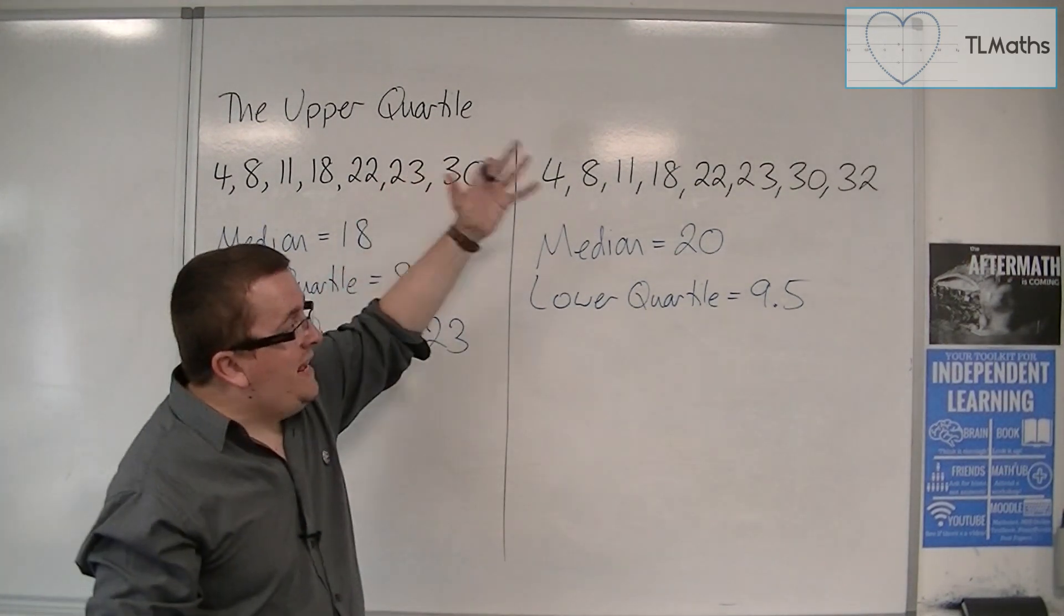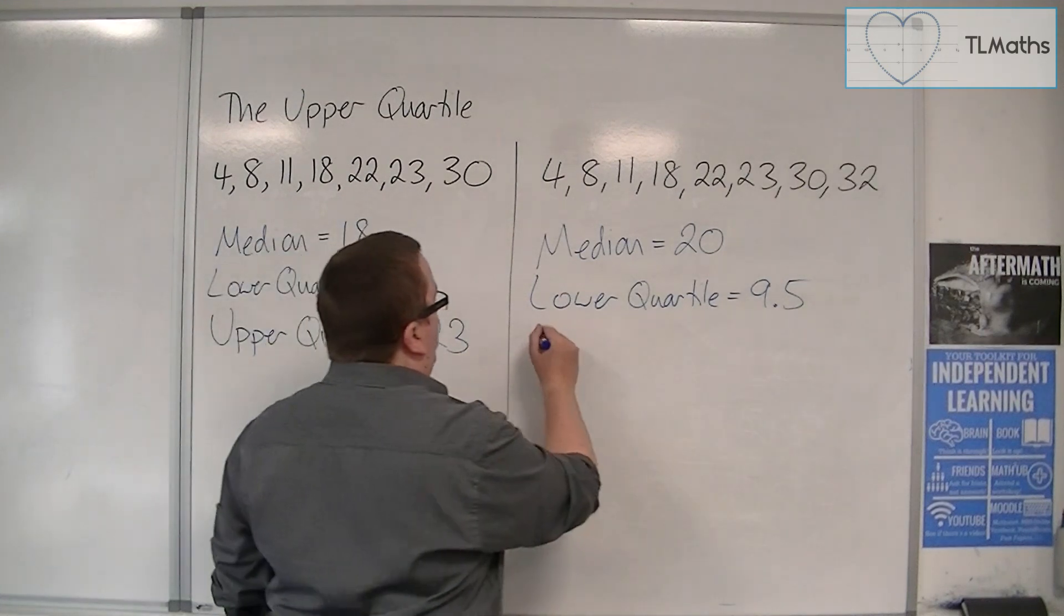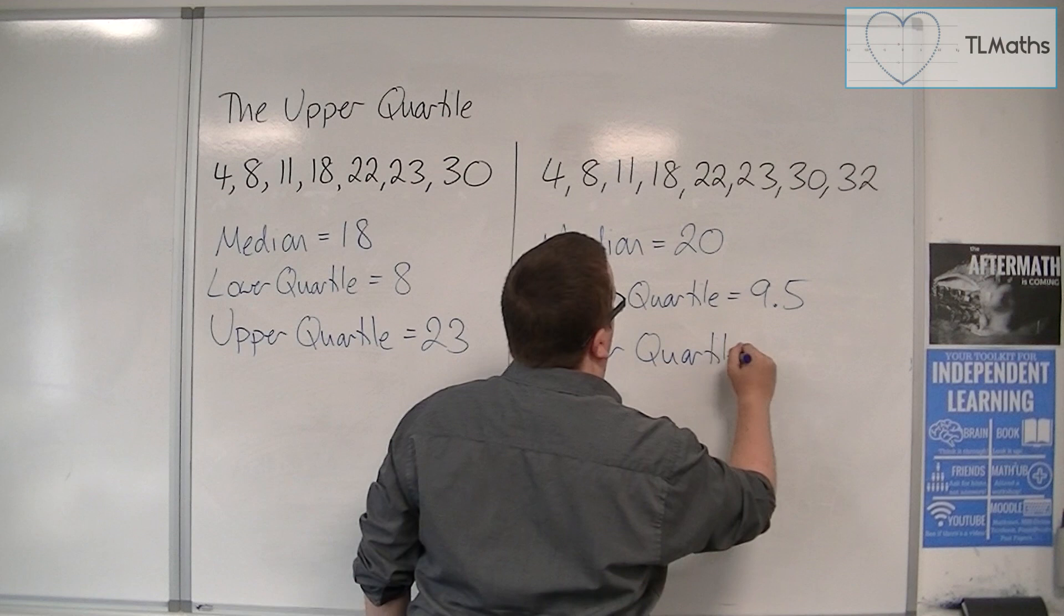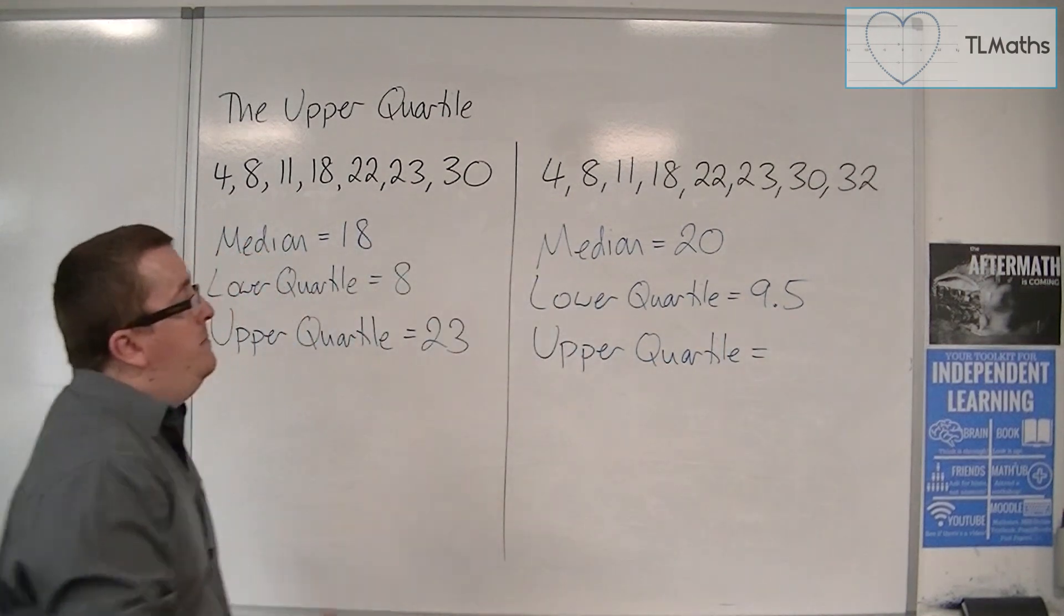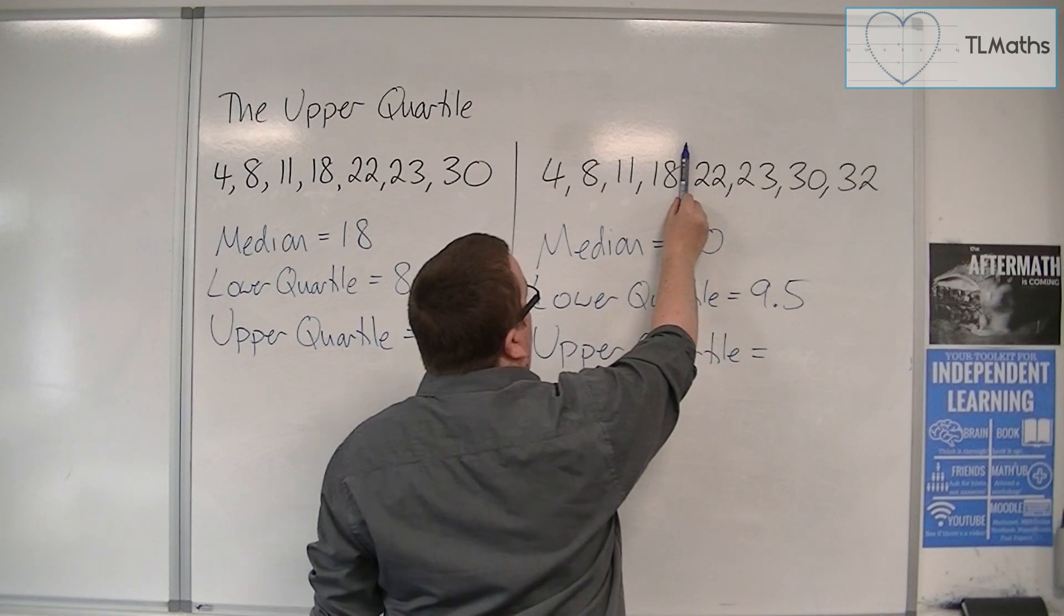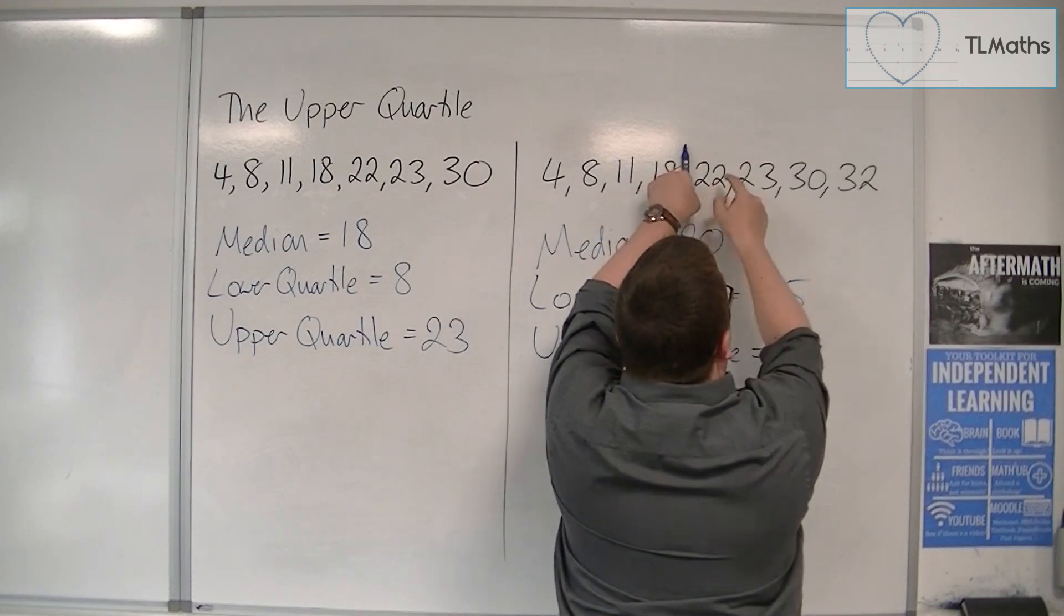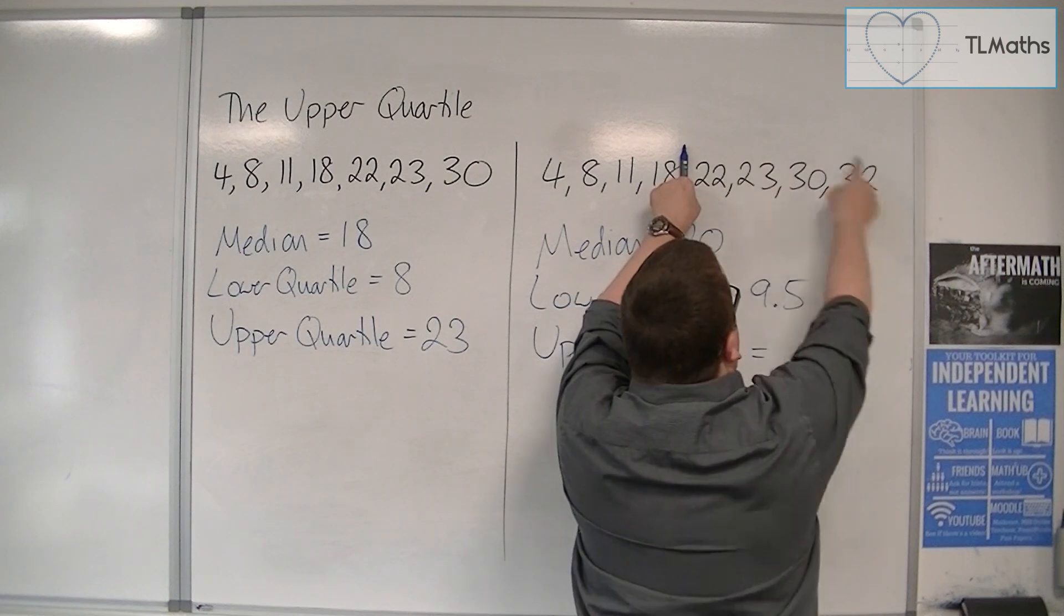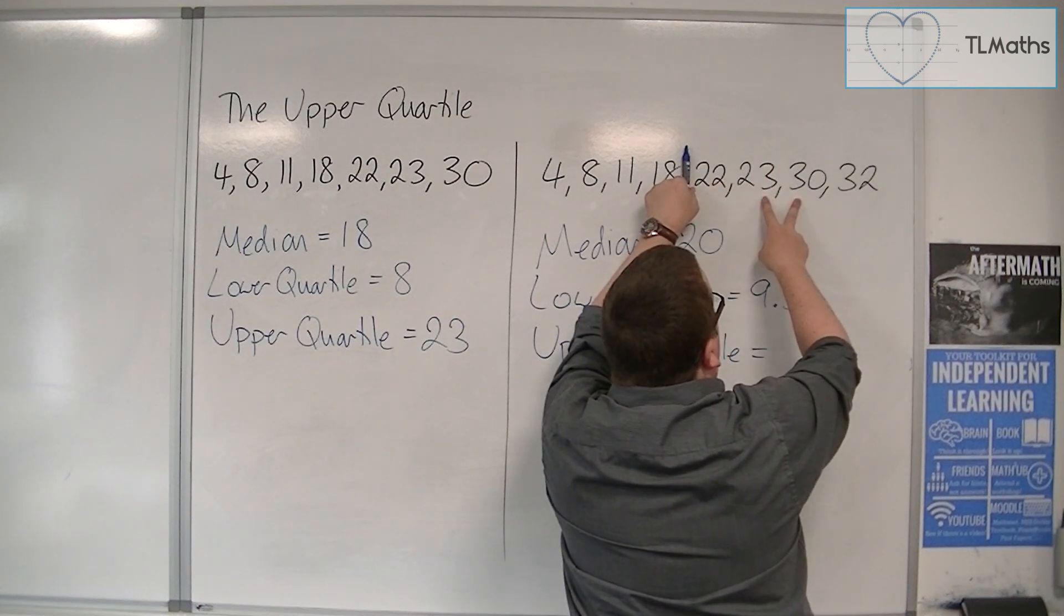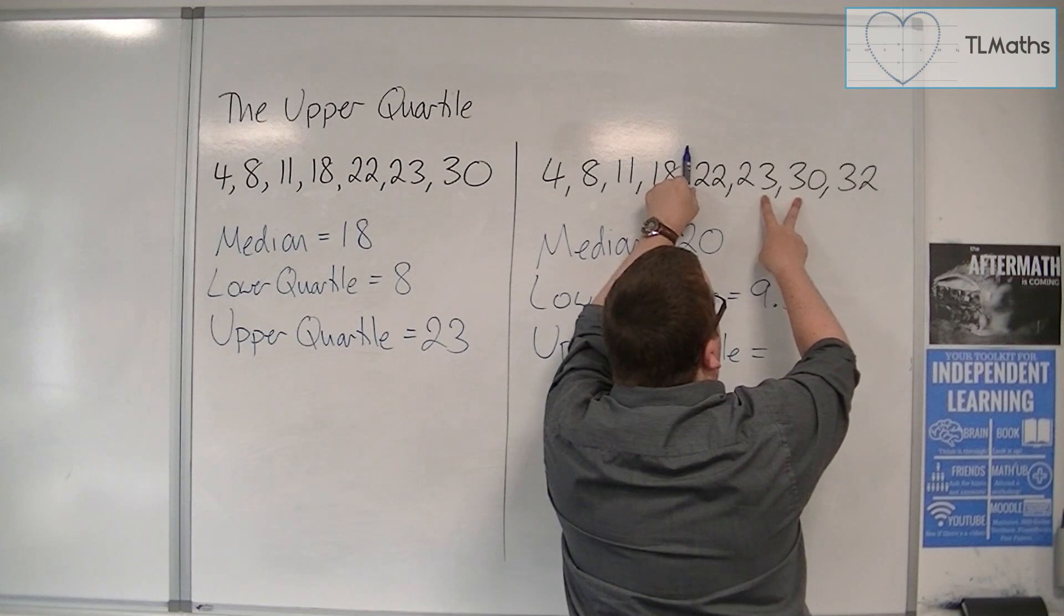Now, for an even set of data like this, we're going to do the same thing. The median here was 20, halfway between the 18 and 22. And so we're now trying to find the median of the second half of data. So that is halfway between 23 and 30.